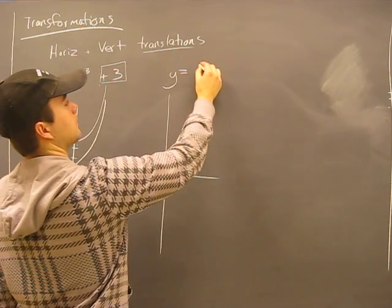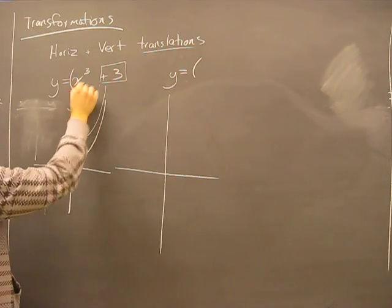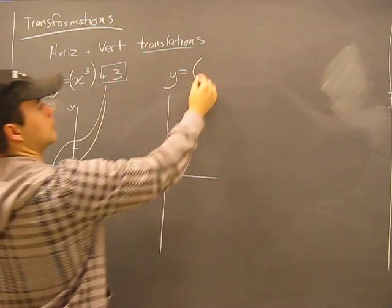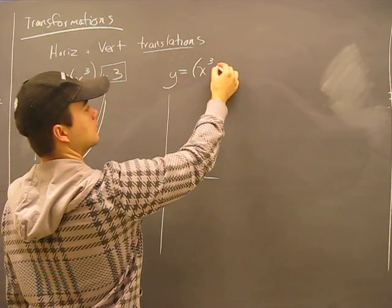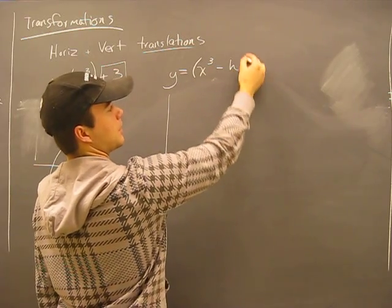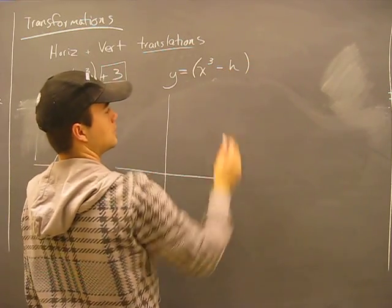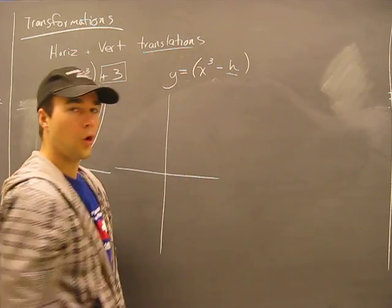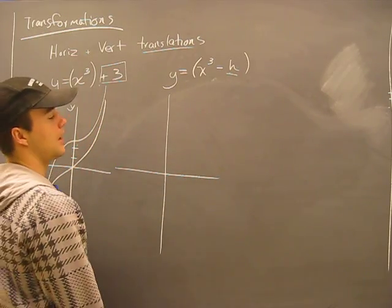Okay, what about this? Let's imagine brackets. What if we did y=(x³-h)? Remember that the equation would be minus h, right? So what if we said we're going to have a horizontal shift of positive three units?